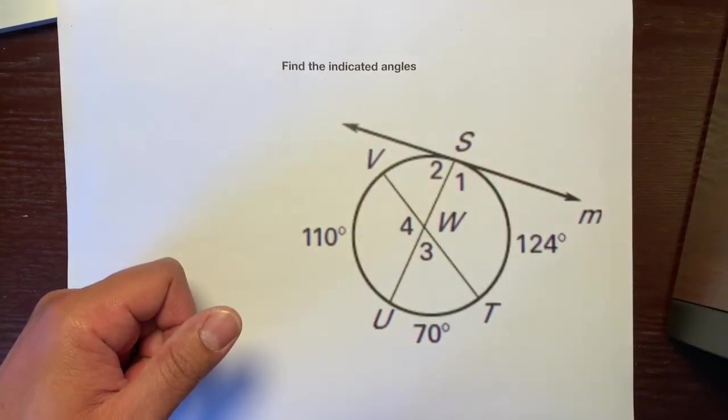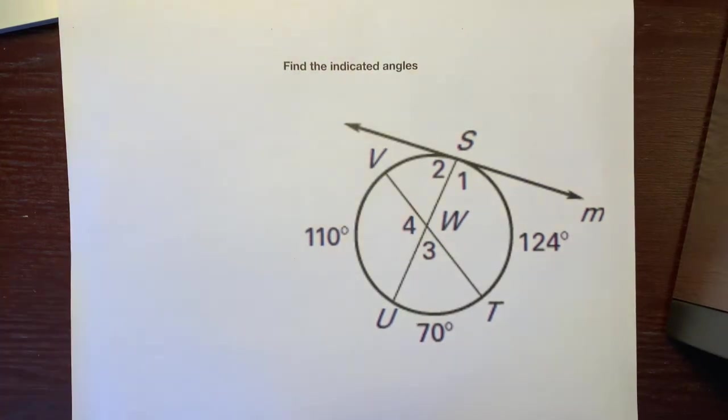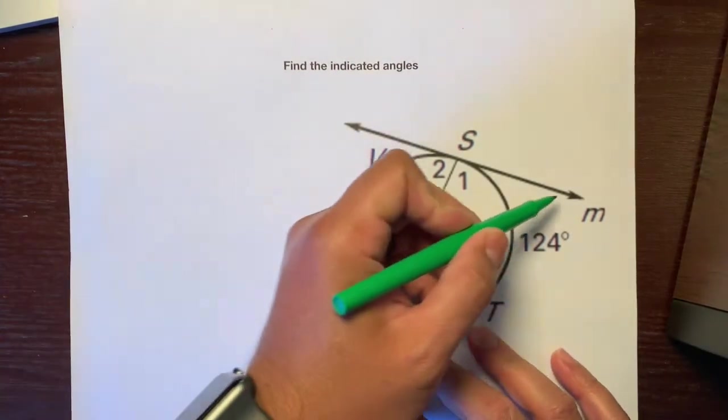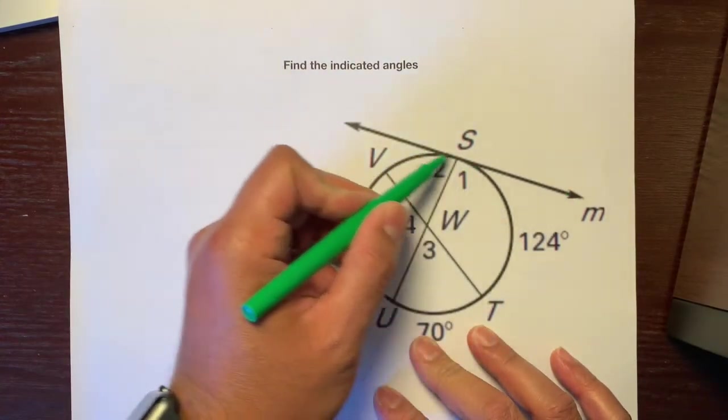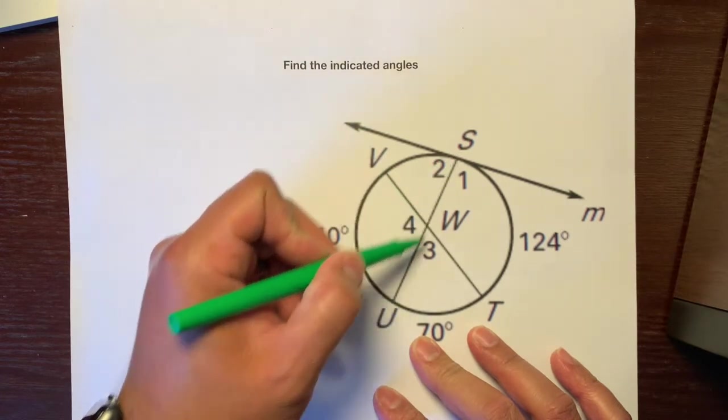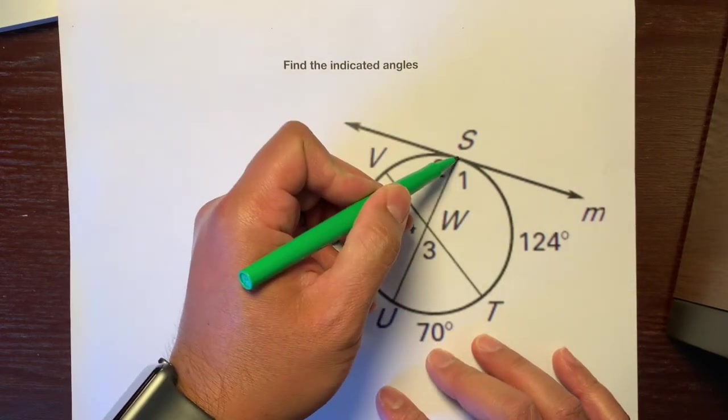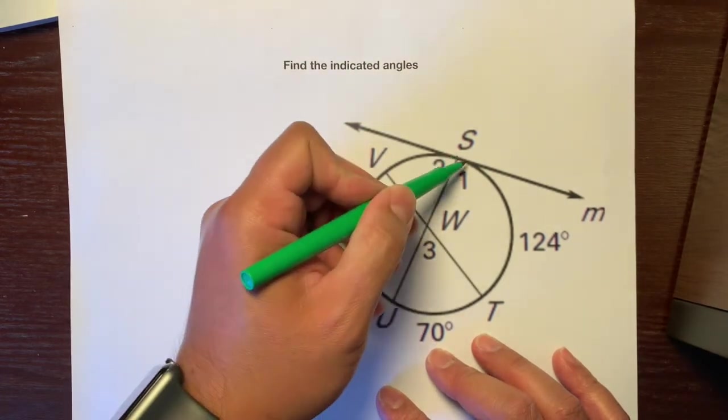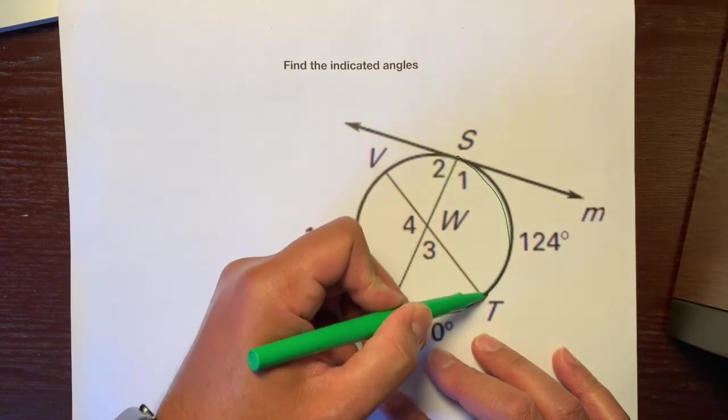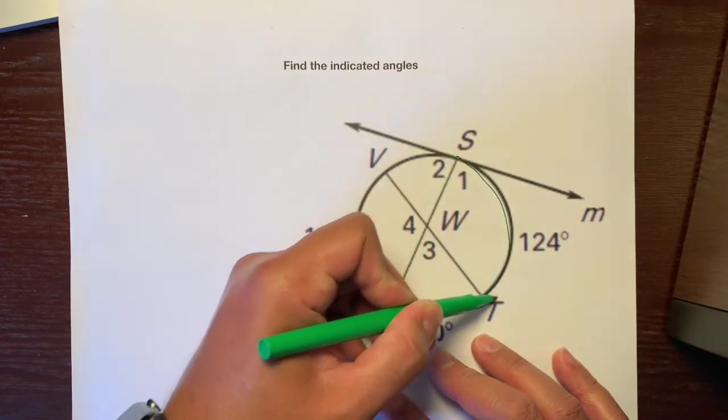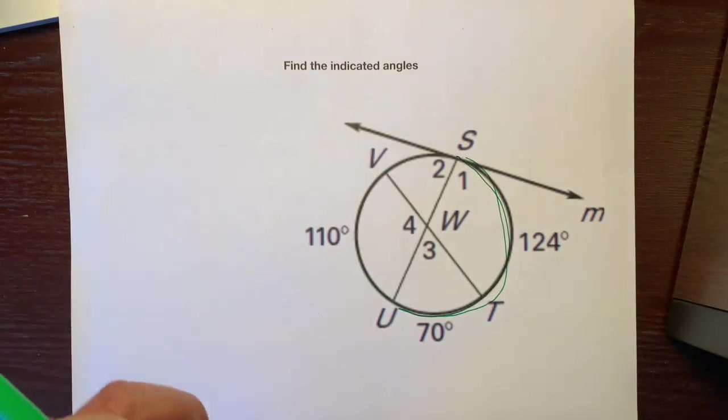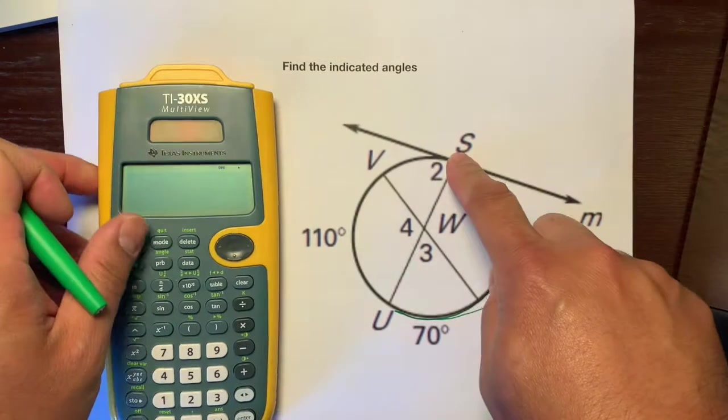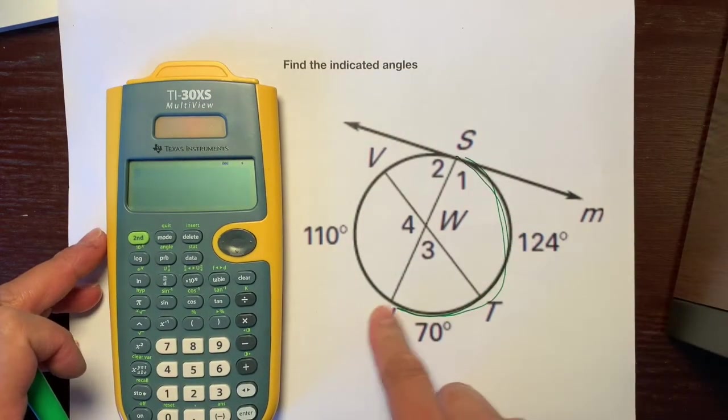Let's start off with angle one. If you guys notice that angle one is made by this tangent line and this chord, and this chord right here is intercepting this arc right here. We're going to figure out what the measure of this entire arc is.